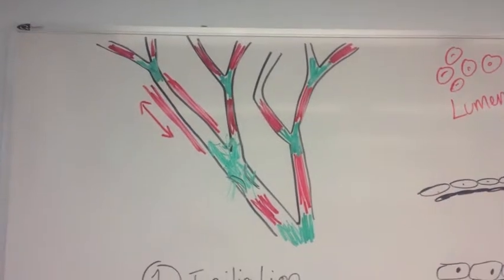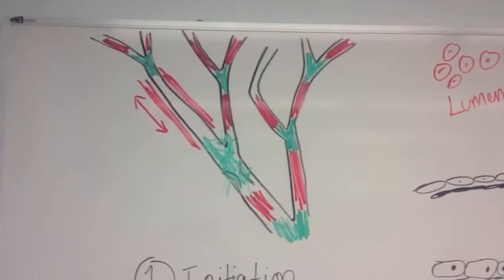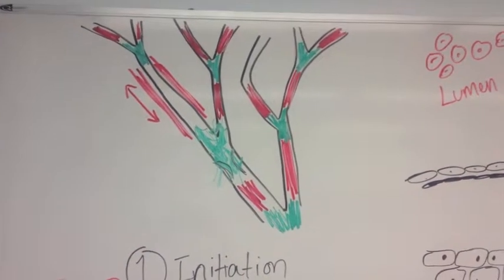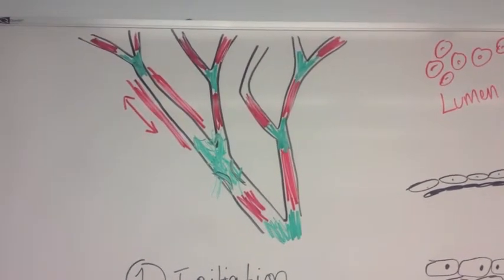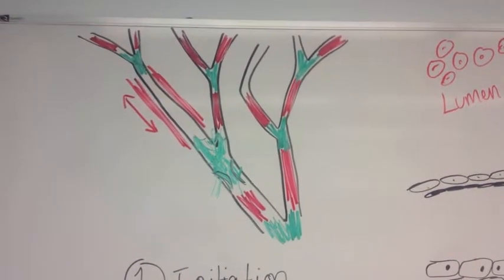Low shear stress is indicated in the green areas of the branch points of the blood vessel. High shear stress is indicated in the red straight points of the blood vessel.